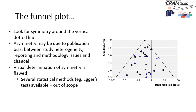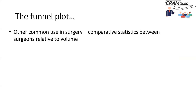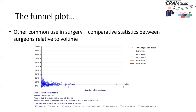We tend as clinicians to assess this visually, looking for symmetry of the dots around the middle vertical line. But ideally you should do statistical testing to assess for publication bias — there are a number of different tests available, though explaining them in detail is beyond the scope of this session.